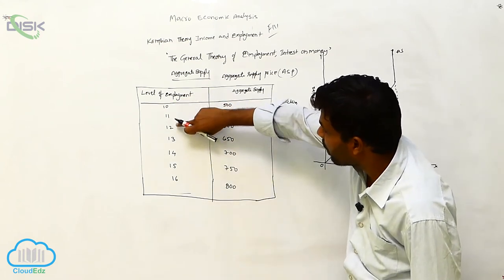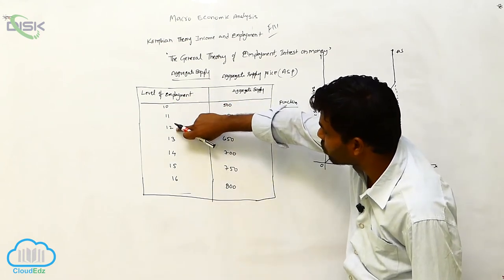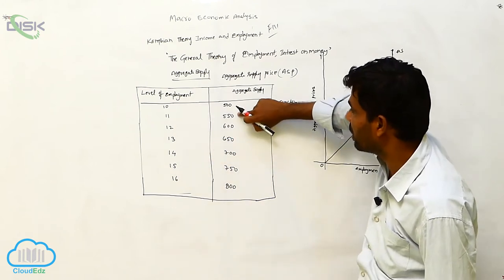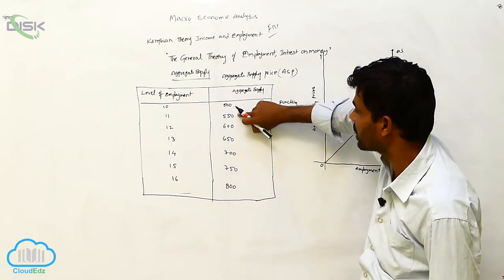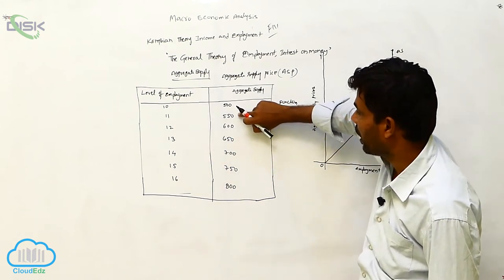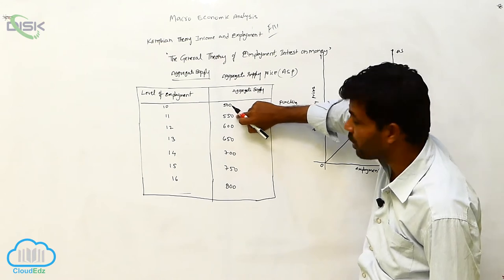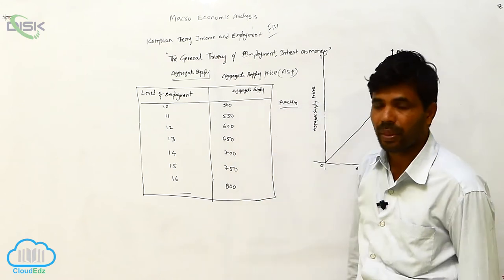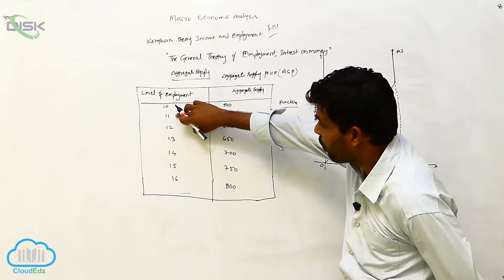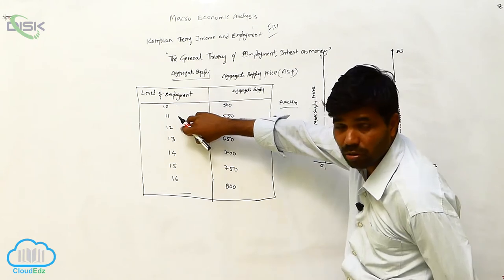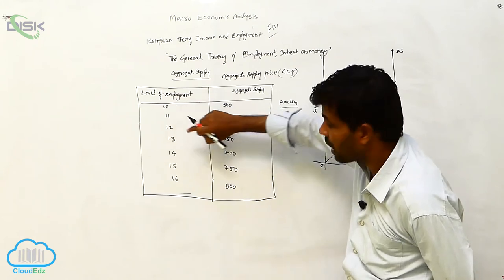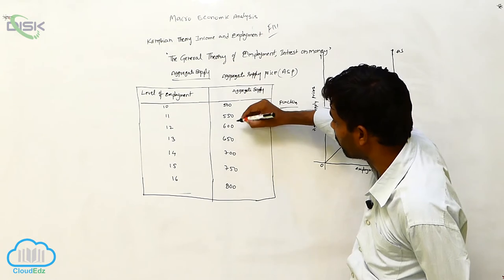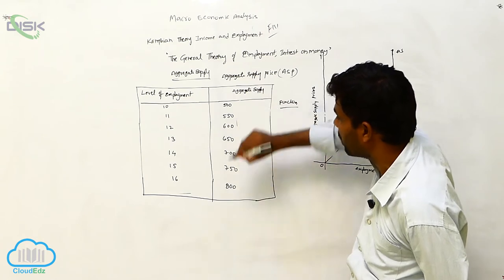When you are comparing stages 11 to 12 levels, the aggregate supply increases from 550 to 600. Employment is also increasing, and aggregate supply is also increasing when you compare these two stages.